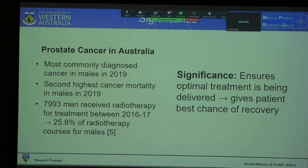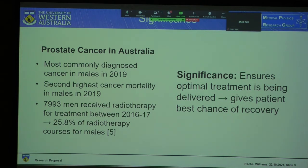Prostate cancer is the most commonly diagnosed cancer in men in Australia and has the second highest mortality rate. 7,993 men received radiotherapy treatment for prostate cancer between 2016 and 2017, which accounted for 25.8% of radiotherapy courses for men. Ensuring that the optimal treatment plan is delivered can both improve treatment outcomes and prevent side effects. By evaluating the air cavity correction parameter, we can ensure it is the optimal treatment to give the patient the best chance of recovery.